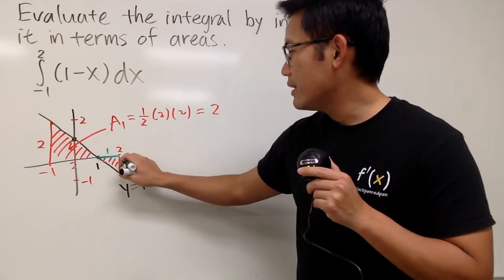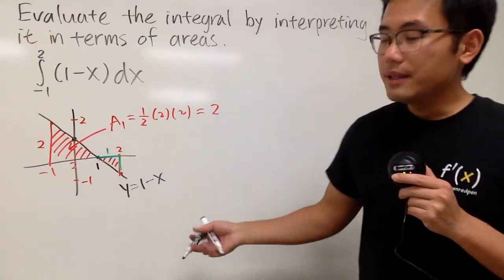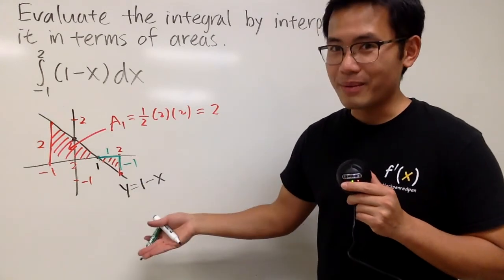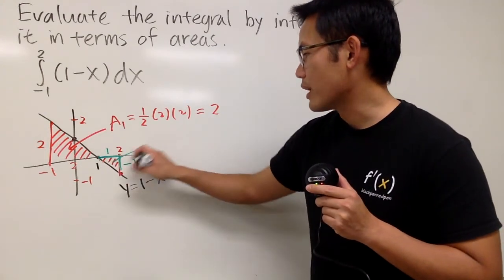And from here to here, and this is technically negative 1, right? Because you are going down below negative 1. And here is the area of this triangle.